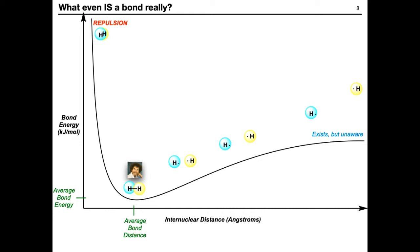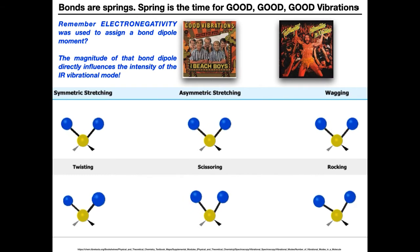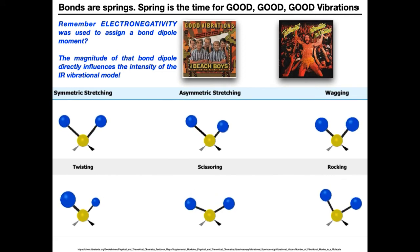The bond itself is moving back and forth — getting shorter, getting longer — like a spring. The IR light is stretching and contracting that bond. Bonds as springs have vibrations, and electronegativity was used to assign the bond dipole moment. The magnitude of the bond dipole directly influences the intensity of the IR vibrational mode.